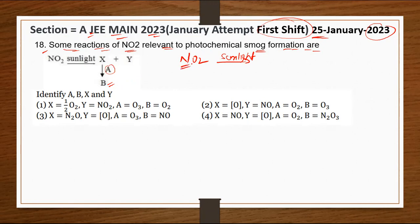Generally, what happens is when NO₂ reacts in the presence of sunlight, it forms O and NO. And this O reacts with O₂ to form O₃.